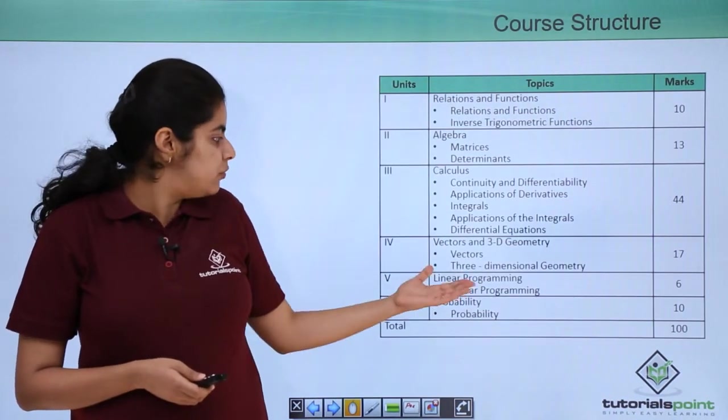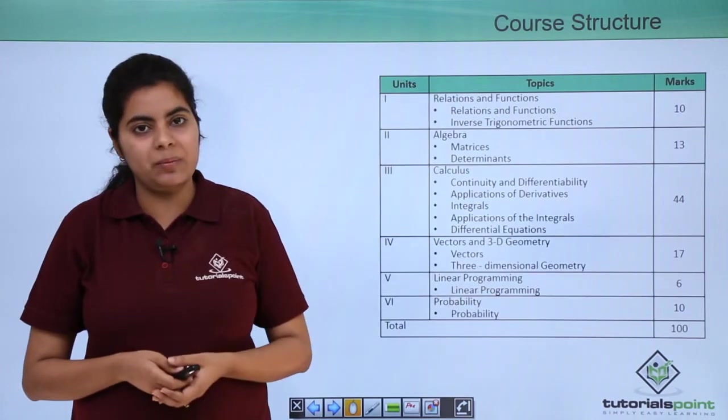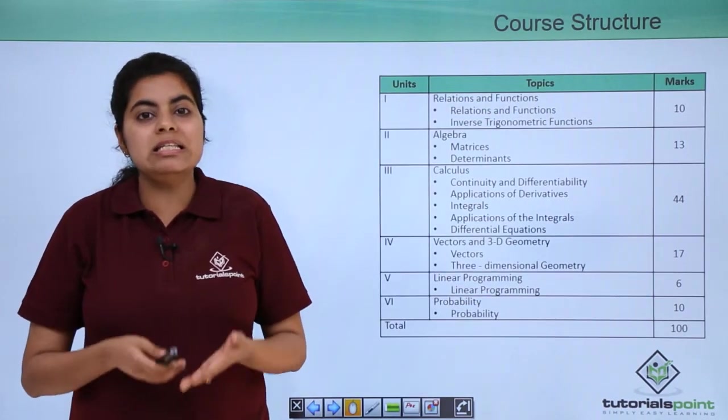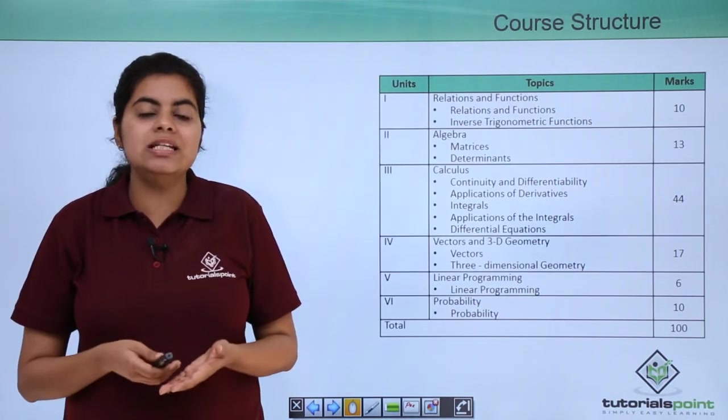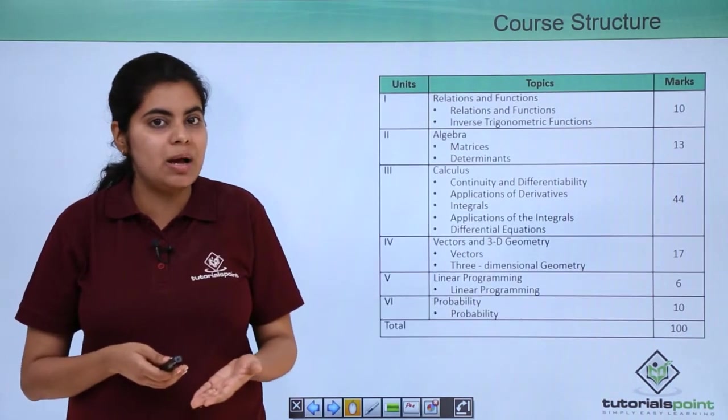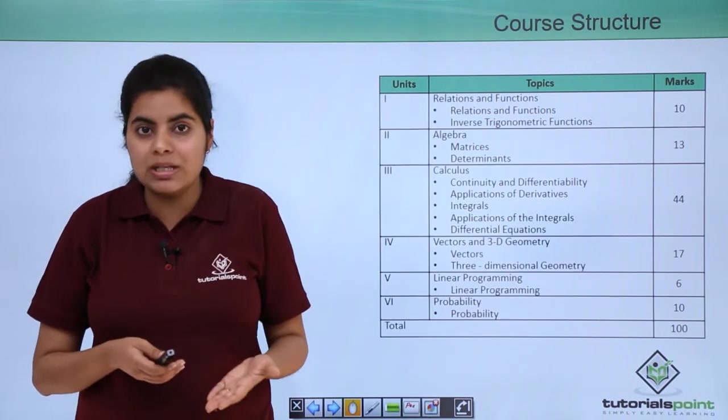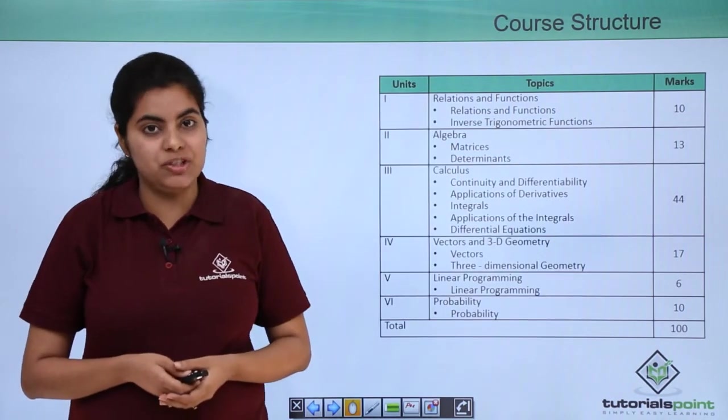Next we come on to the fifth unit which is linear programming. Linear programming is a must do in class 12th. You cannot leave this chapter because it is again one of the easiest chapters, one of the easiest units as well after the study of the unit of algebra.